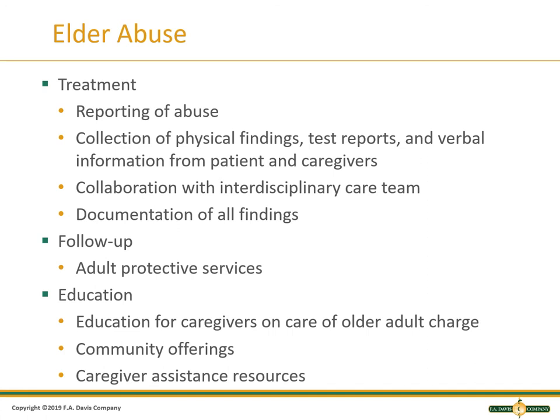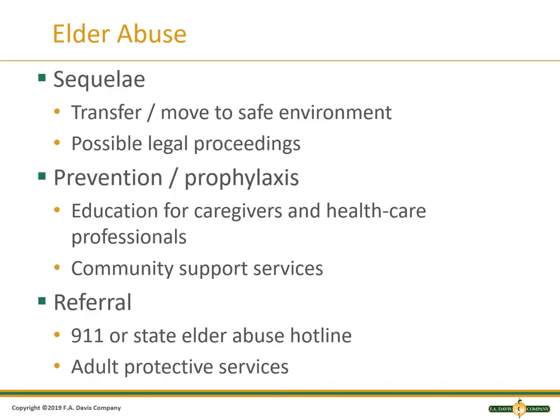In the sequela, we talk about transferring the patient to a safe environment — do they need respite care, placement in a facility, or are there legal proceedings that need to occur? For prevention and prophylaxis, educate caregivers and healthcare professionals on coping mechanisms and how to manage these patients, especially if they have dementia or delirium that is chronic. Look for community support services. If you cannot get anywhere and you do not feel they are safe to go home, call 911 or the State Elder Abuse Hotline.